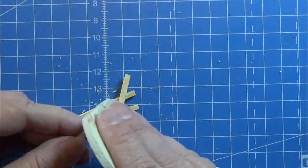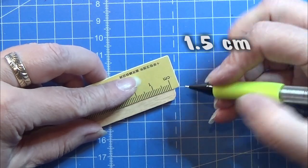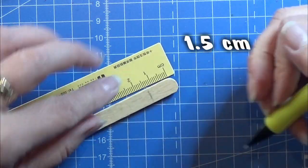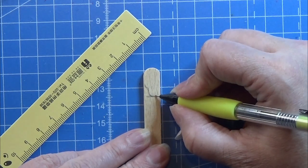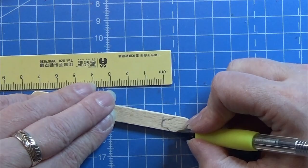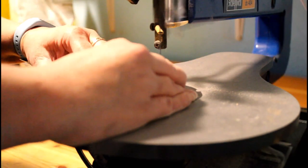Now we are going to make the saddle. Here I am drawing a line at 1.5 centimeters and I'm drawing in the saddle design. When I'm happy, I'm taking it to my scroll saw and sawing it out.